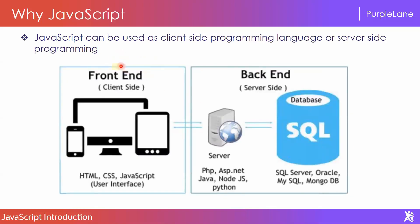This is the front end and this is the back end — also called client side and server side. The server side broadly has the server and the database where we store all website information. The front end is developed with HTML, CSS, and JavaScript. When you click login and enter a username and password, that request is sent to the server. The server reads the credentials, checks them against the database, and sends the response back. This logic can be written in PHP, ASP.NET, Java, or Python.